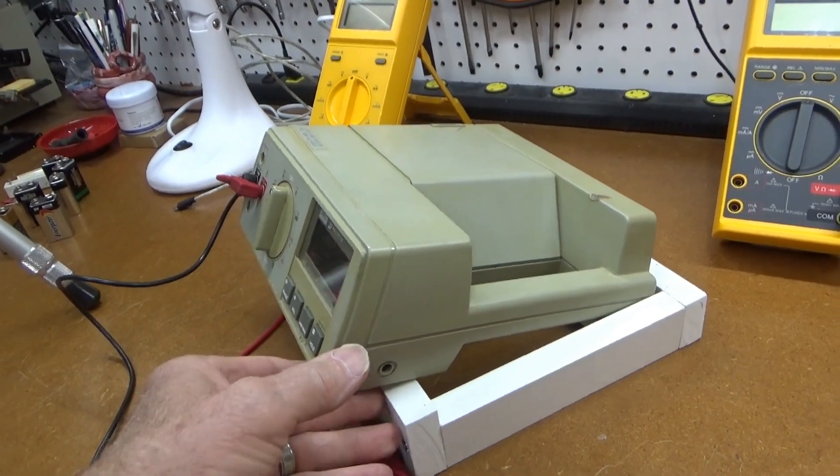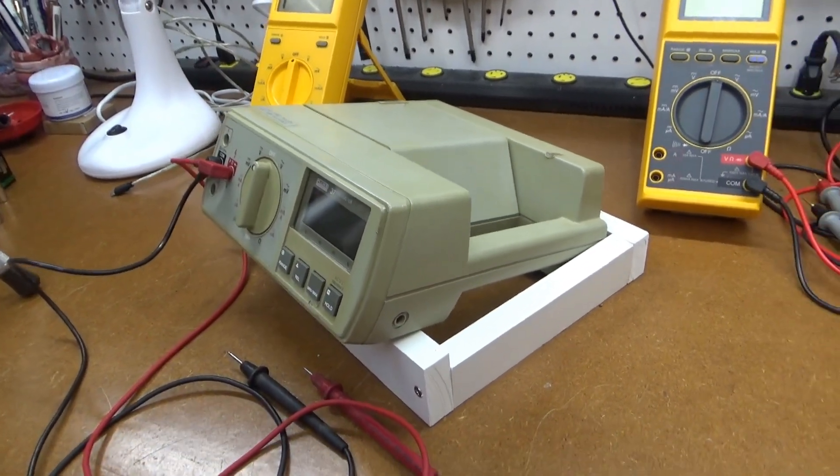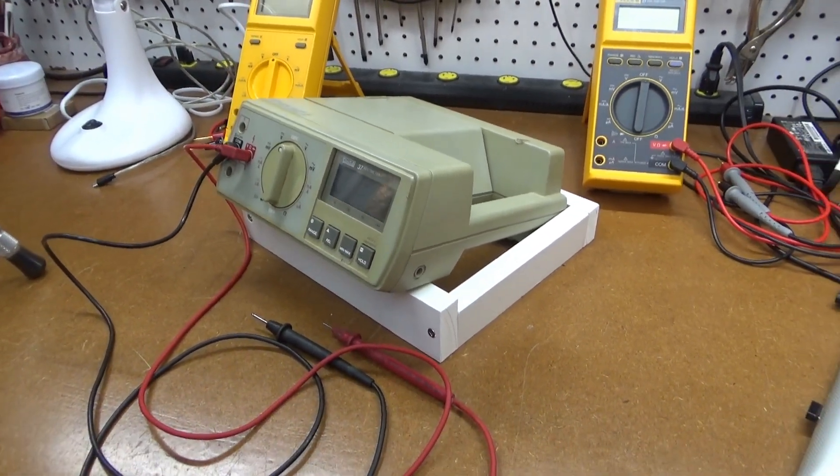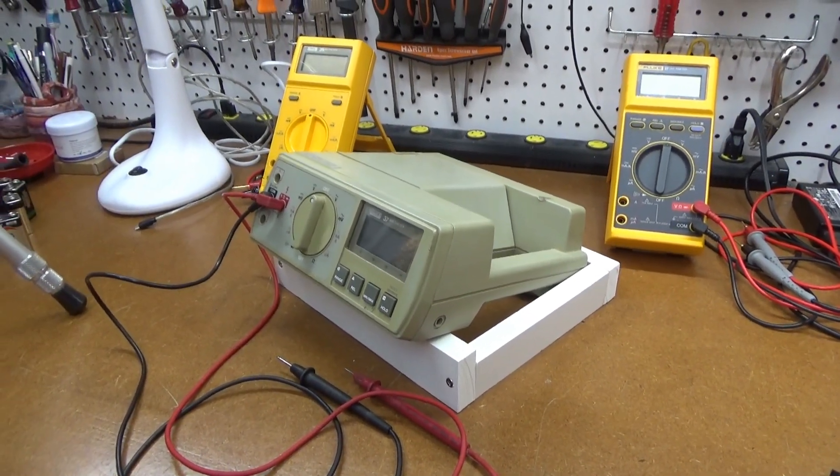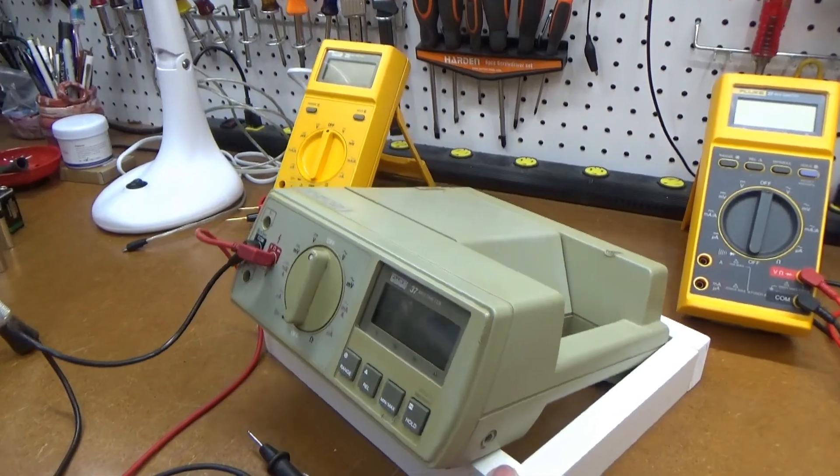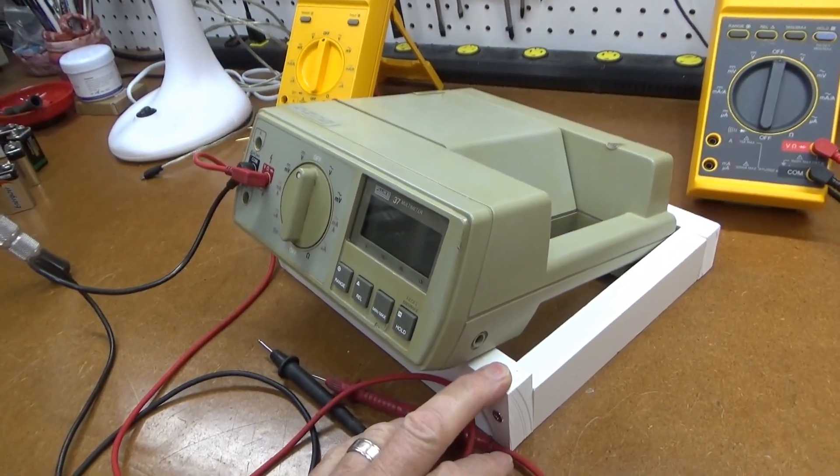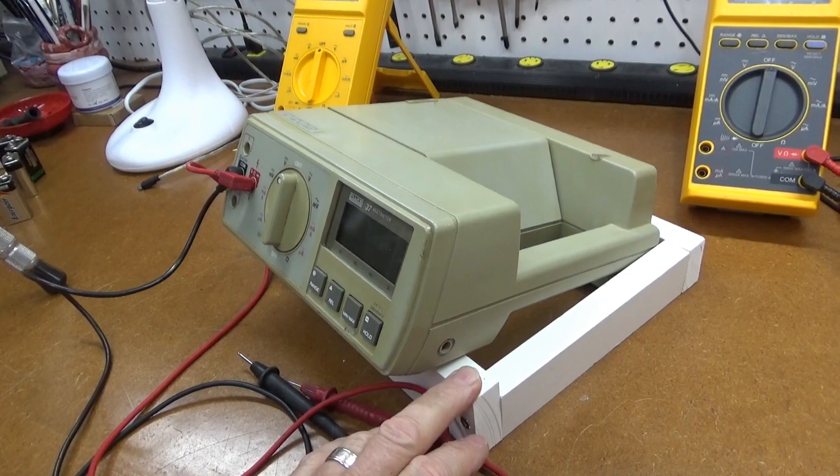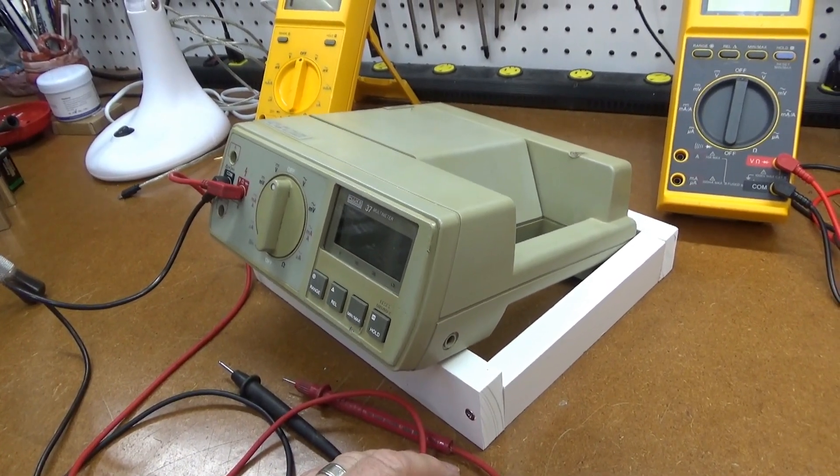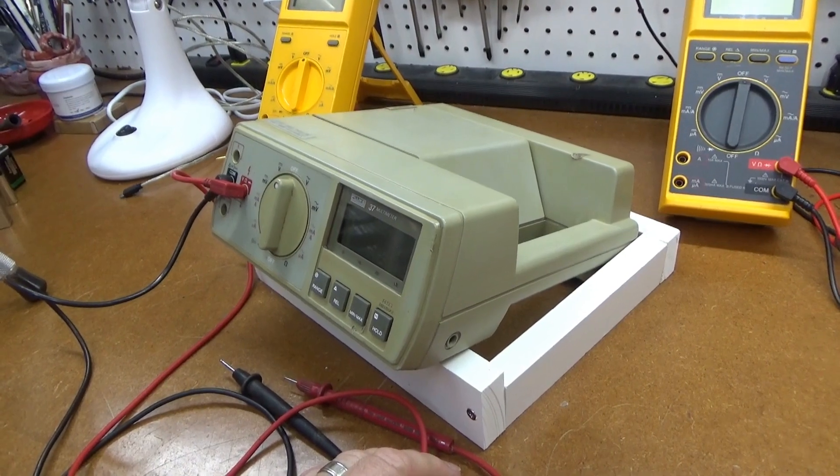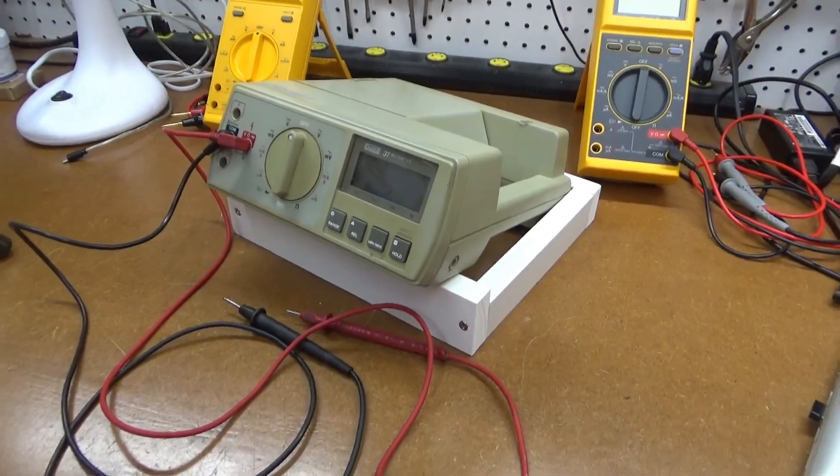So I picked up one relatively cheap off eBay. It was 40 bucks with free shipping, which I think is pretty reasonable. When Dave Jones on EEV blog features something on his channel, the prices on eBay kind of go up because everybody wants them. But I got this one that works perfectly.